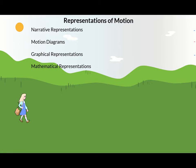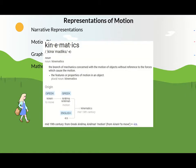Let's think about the motion of objects — motion is something that happens around us all the time, and we normally don't have to spend a lot of time thinking about it. However, any good physics program usually begins with the study of what's called kinematics. Kinematics is the branch of mechanics concerned with the motion of objects.